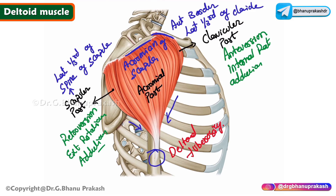The acromial part is responsible for abduction of the arm between 15 degrees and 90 degrees. When the acromial part is performing abduction, the clavicular and scapular parts also assist — even though they are not the primary movers of abduction, they help during this movement.